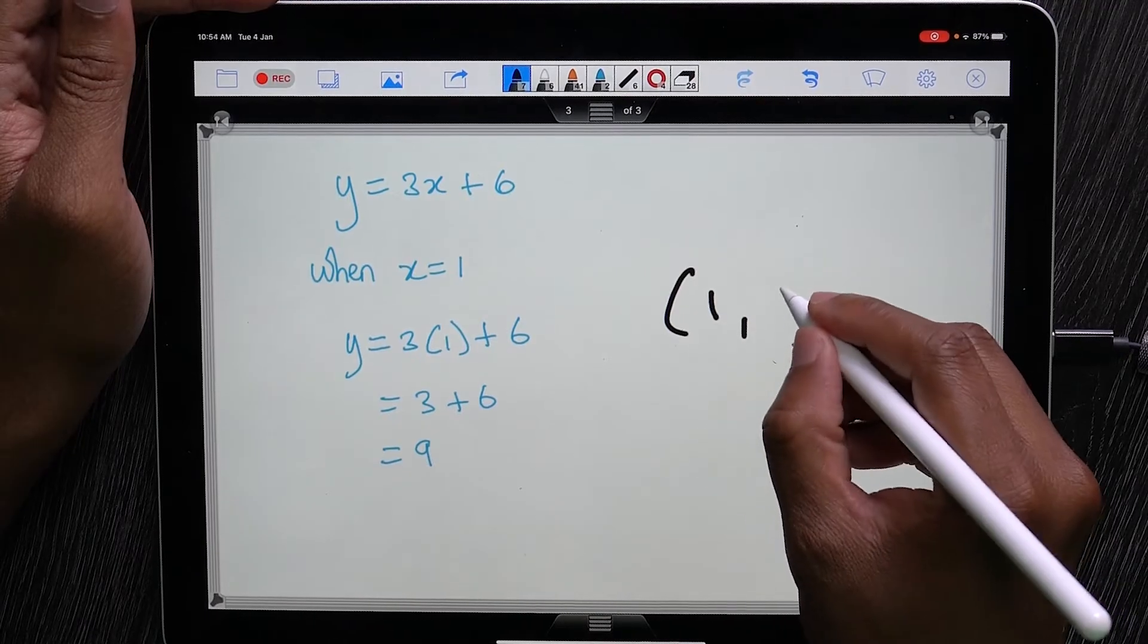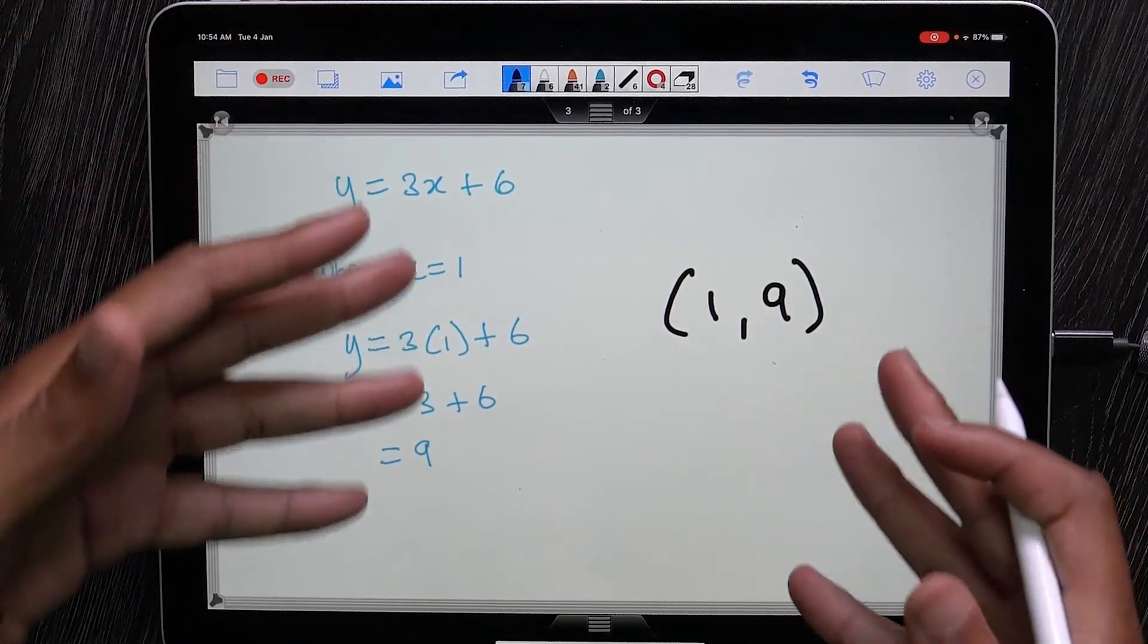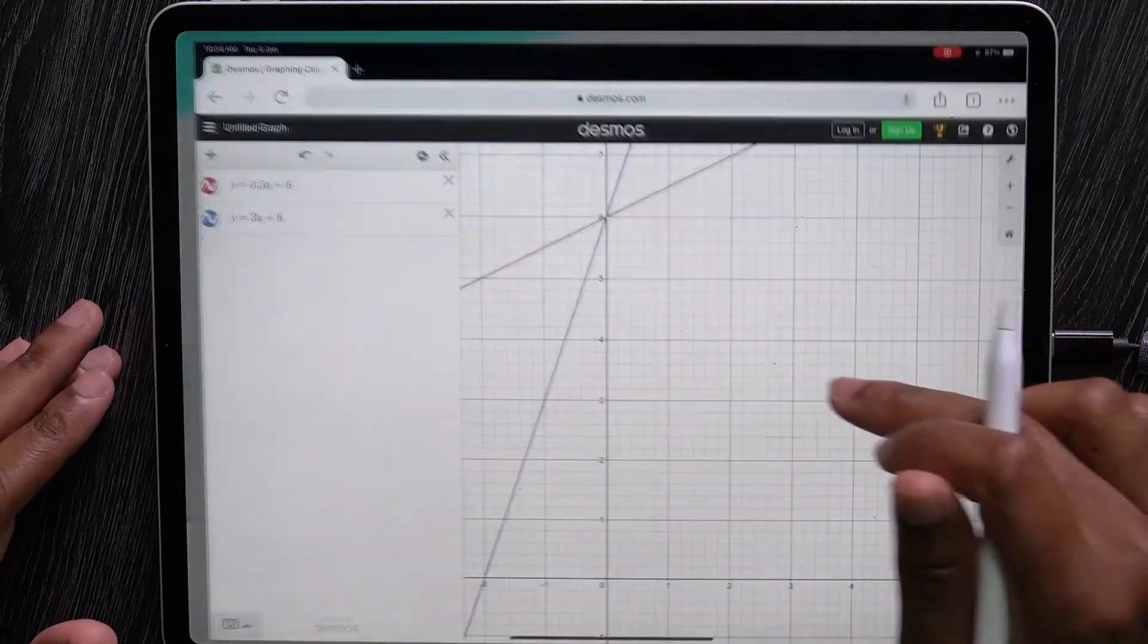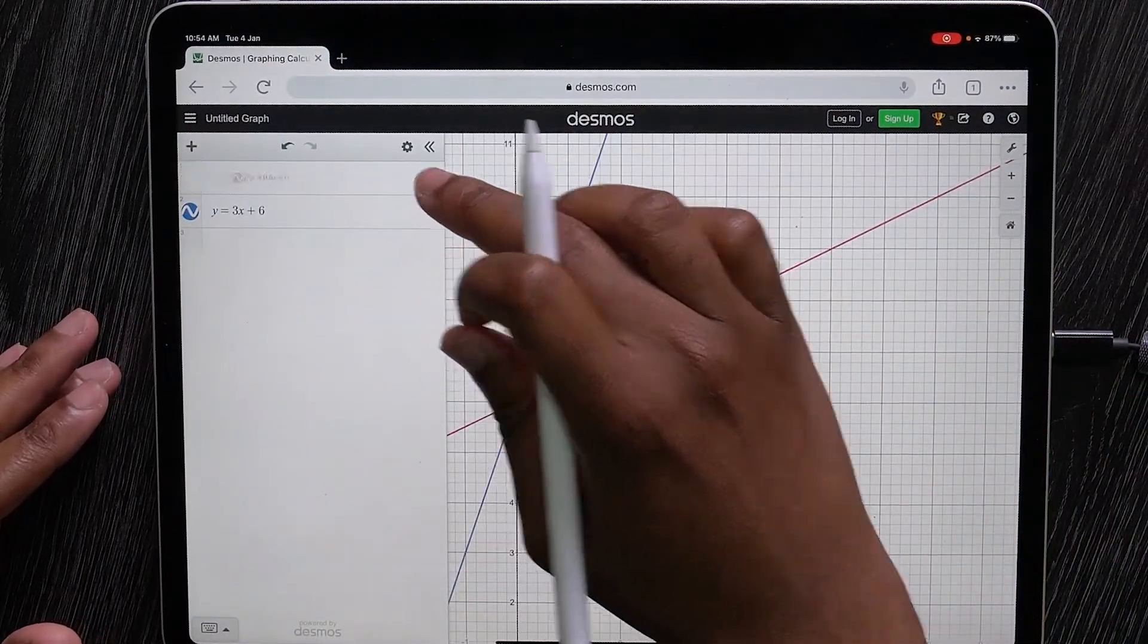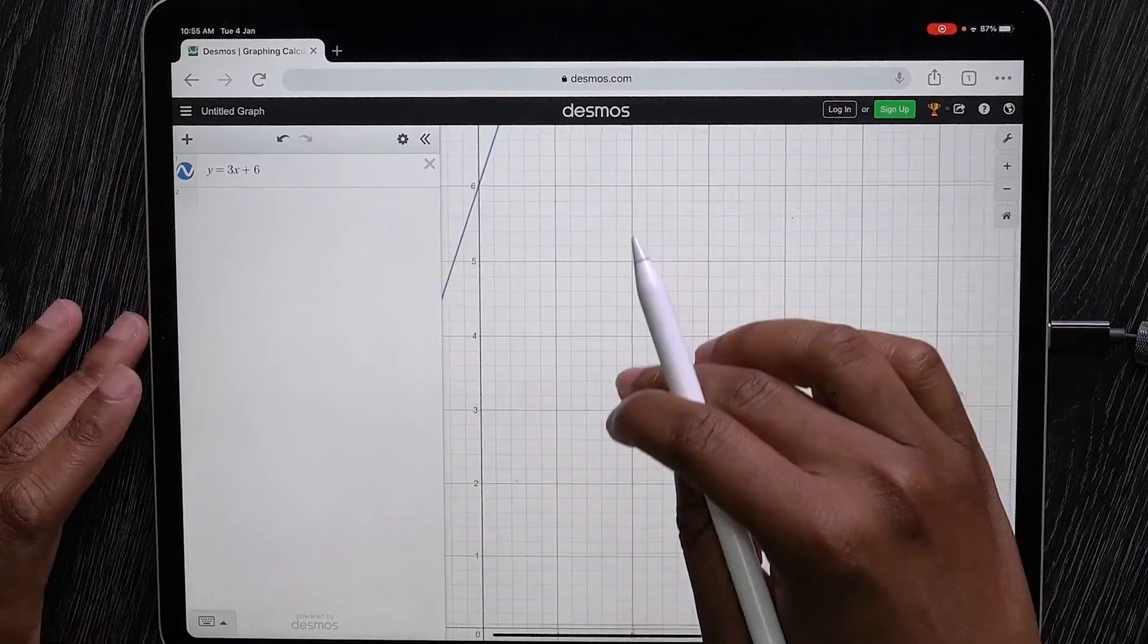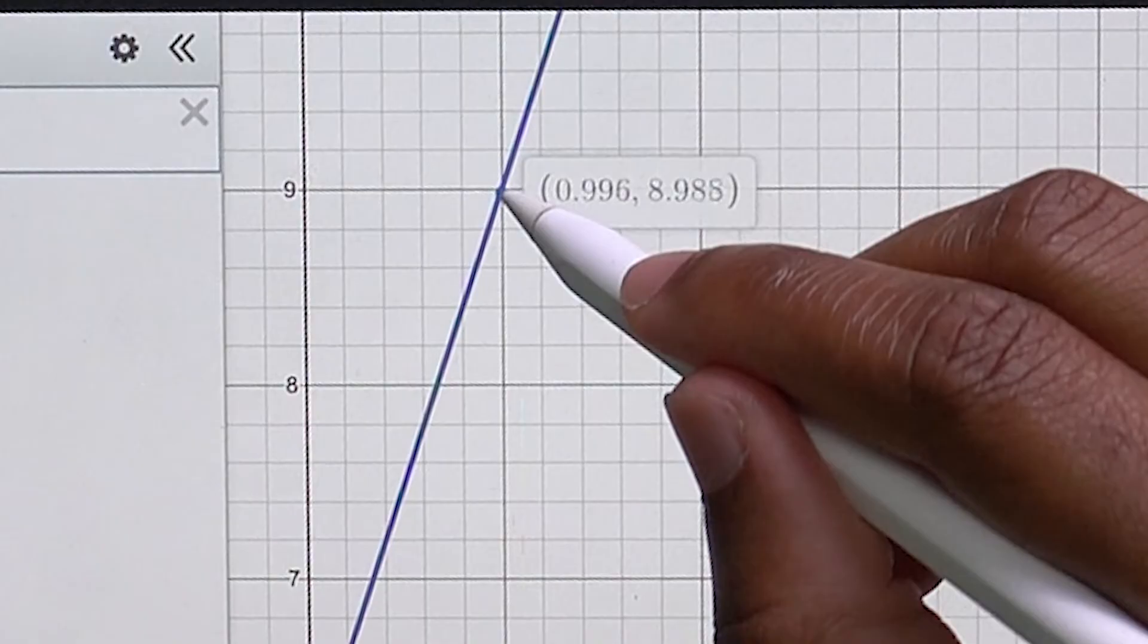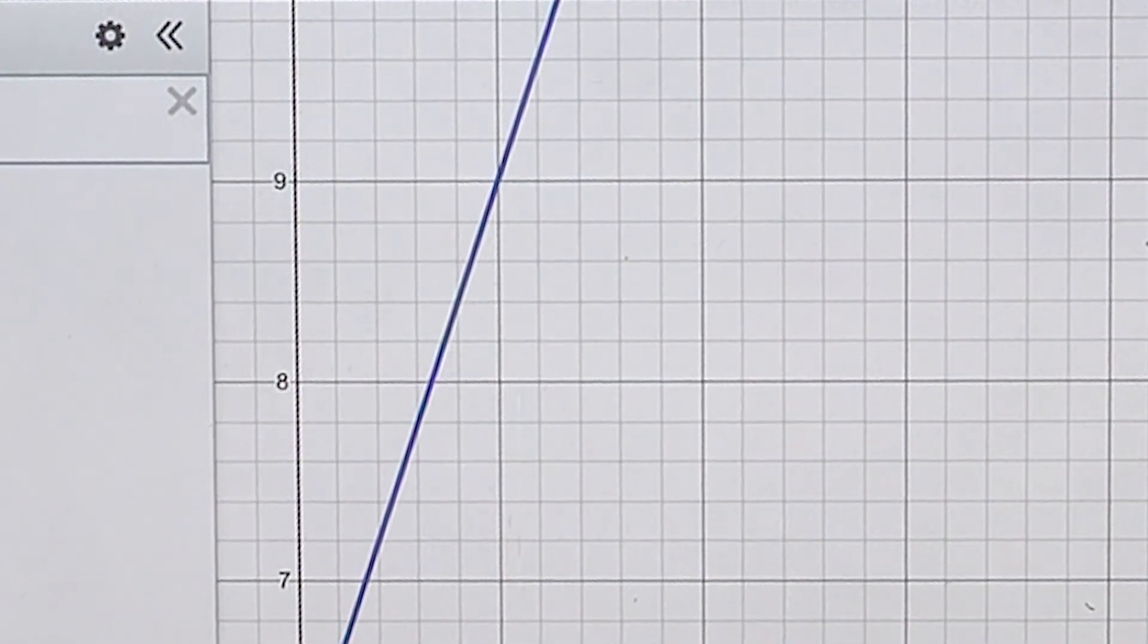When x is 1, y is 9. So this is a coordinate on the line. Now you can verify this. Let's go back to our line. When x is 1, go all the way up. Boom! That's a point on the line right there. 1, 9 is a point on the line.